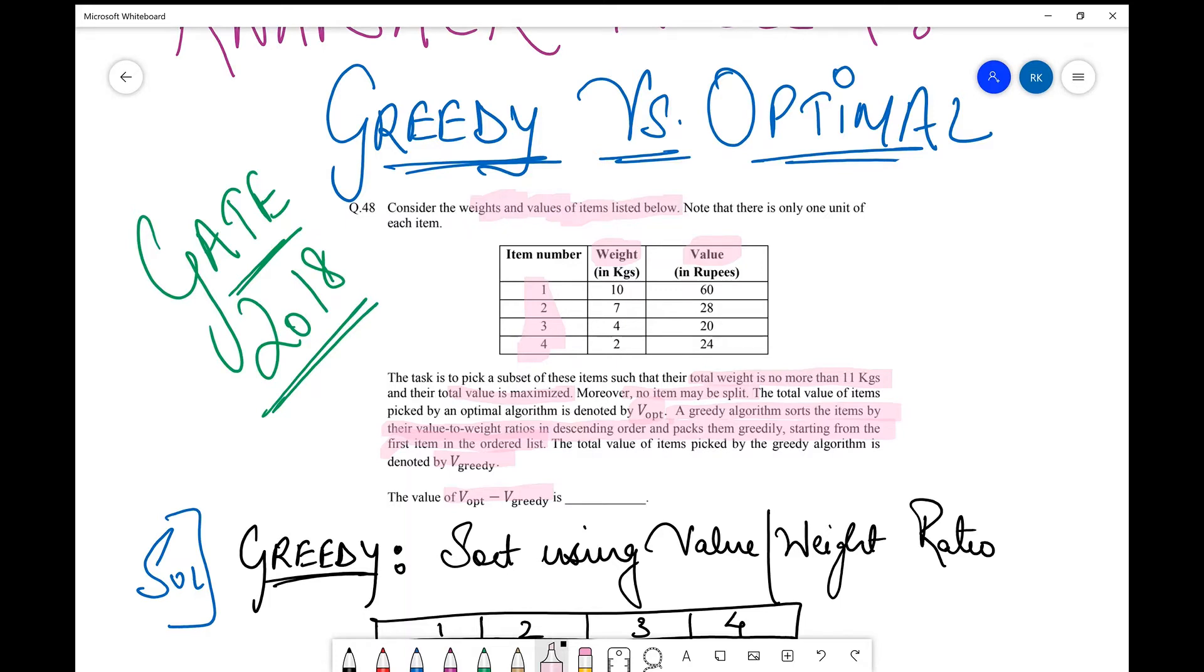Greedy has already defined that you need to sort the items in value to weight ratio. And once you pick, you always pick the item with the maximum value to weight ratio and then you decide for the next item depending upon the weight left in your bag. We're going to take this in detail when we solve the question.